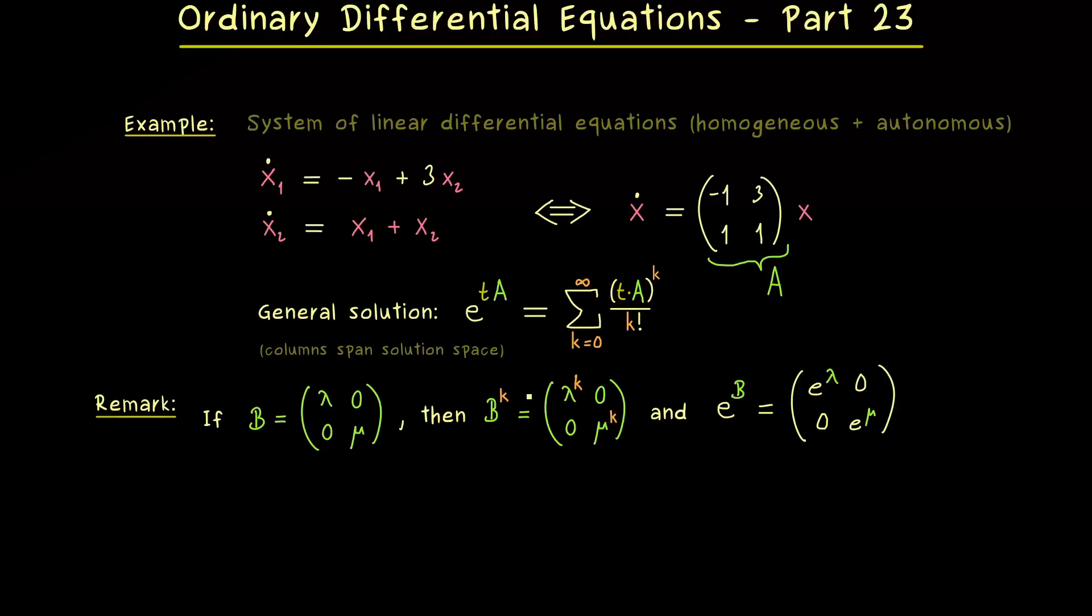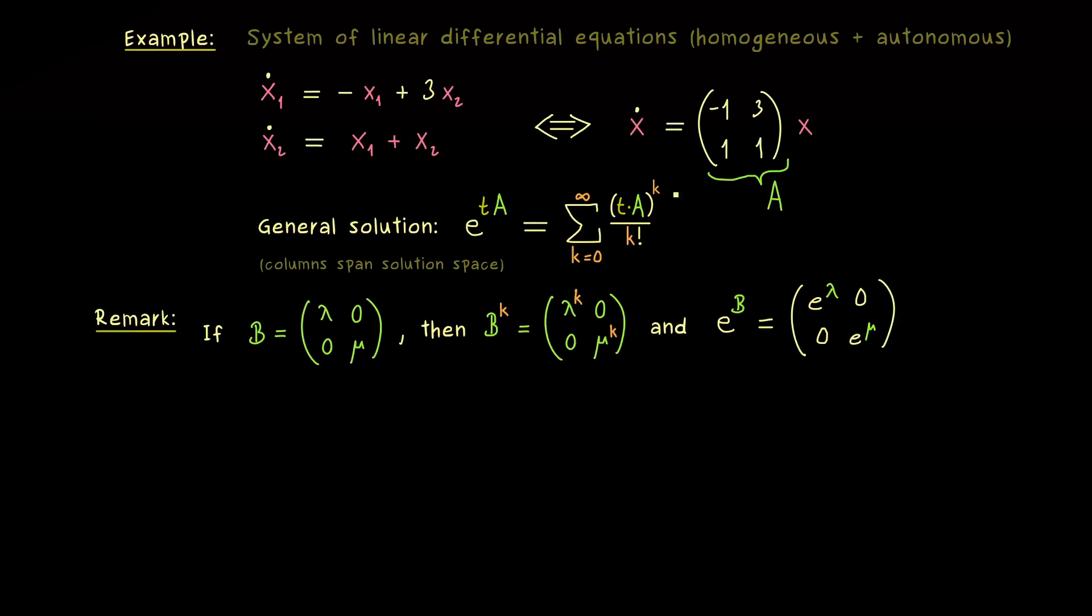However, this does not help for our example because obviously A is not a diagonal matrix. But maybe it's possible to transform A into a diagonal matrix. In fact, from our linear algebra course we know that a special class of matrices exists, and we call them diagonalizable. And the notion simply means that these matrices can be transformed into a diagonal matrix we can call D. More precisely, this is done by using an invertible matrix X and the matrix multiplication. Moreover, in the linear algebra language we would say that A and D are similar matrices. Therefore, the important result is that diagonalizable matrices are almost as good as diagonal matrices in calculations.